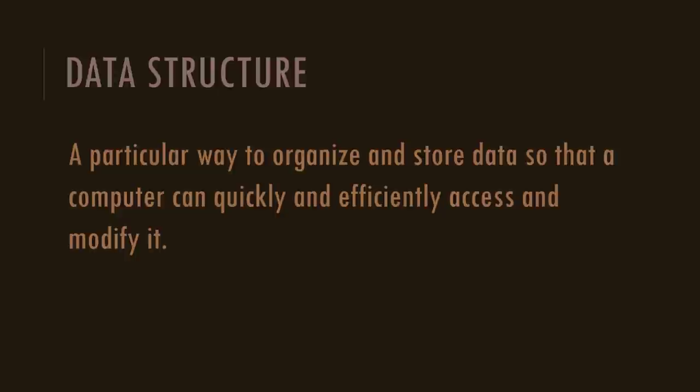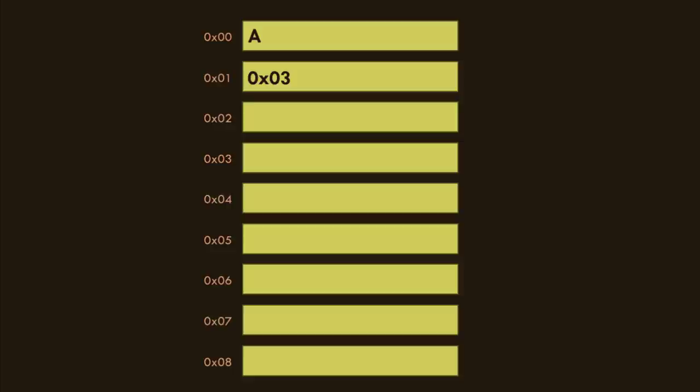A computer's memory is full of data that sits in particular memory locations with addresses to identify them. The data can be accessed via that address, and a memory location can contain a reference to the address of a different memory location, pointing from one to the other. We can think of a data structure as deciding what different memory locations will contain - whether they will contain data or point to other memory locations.